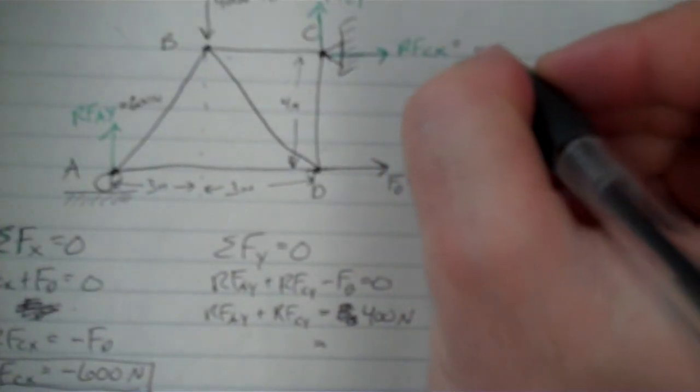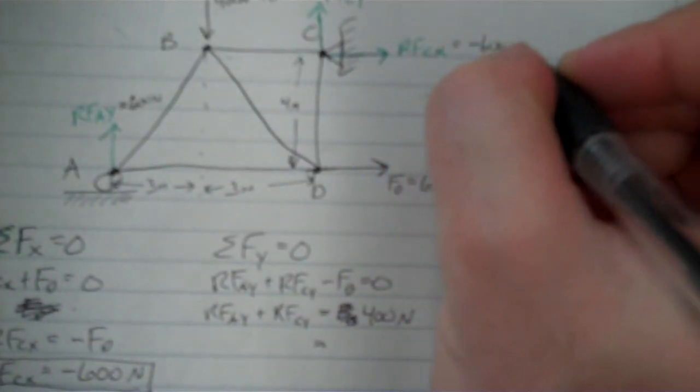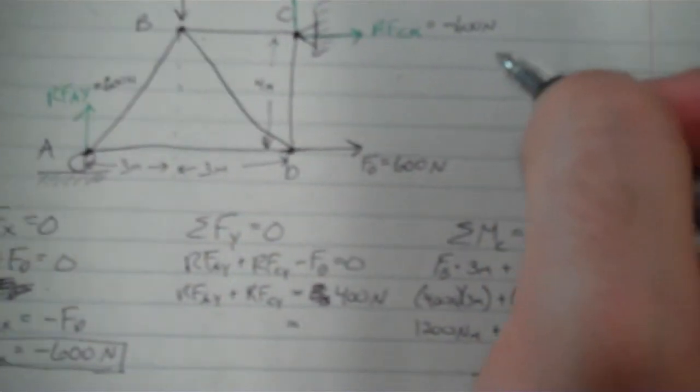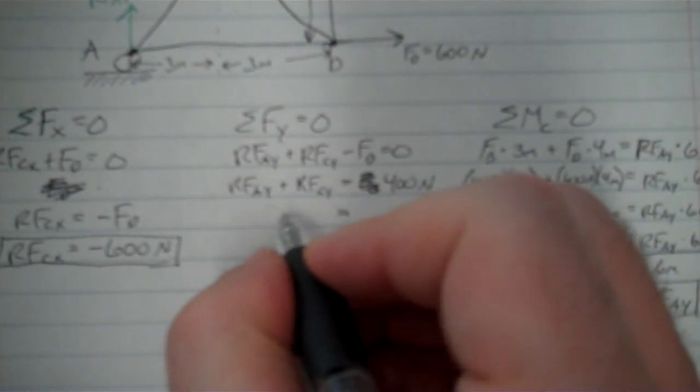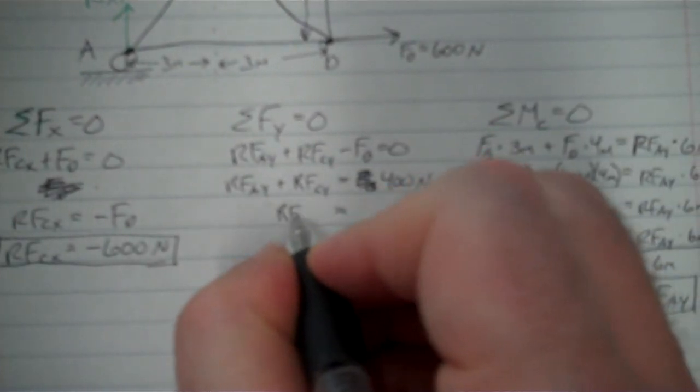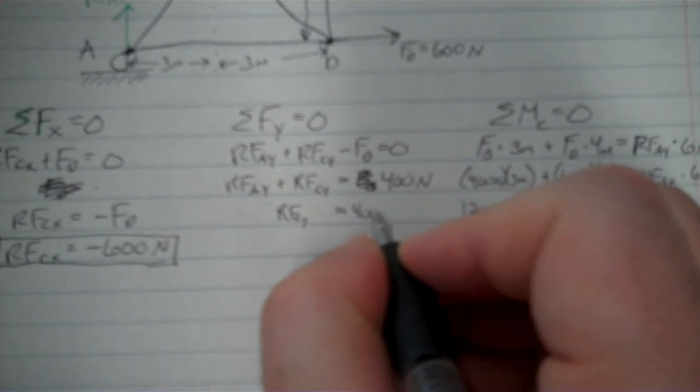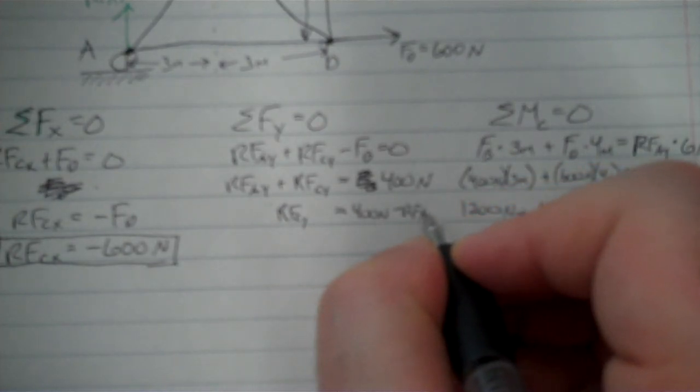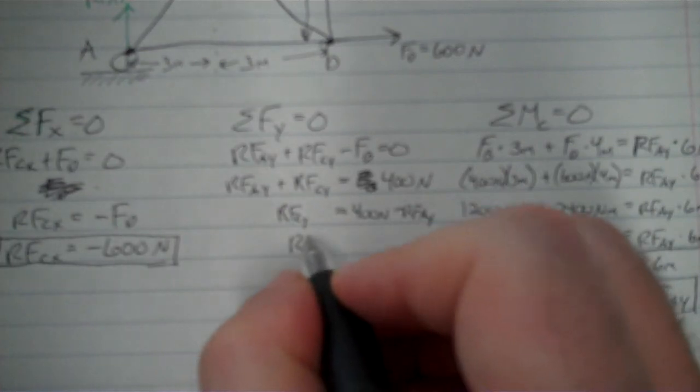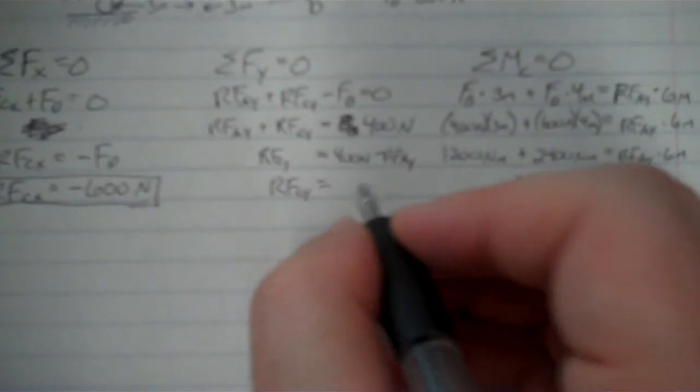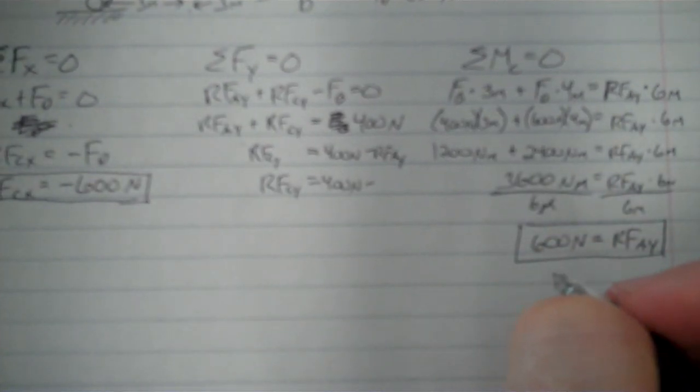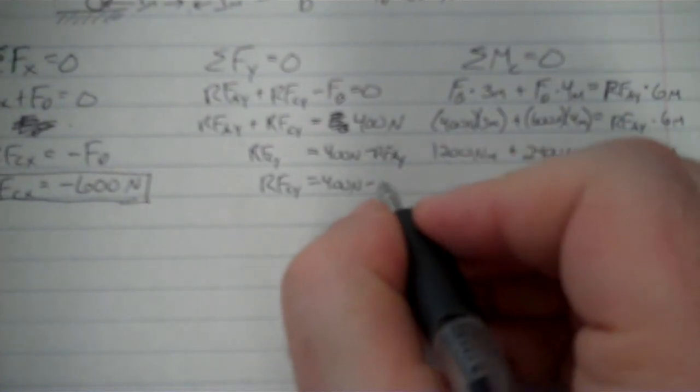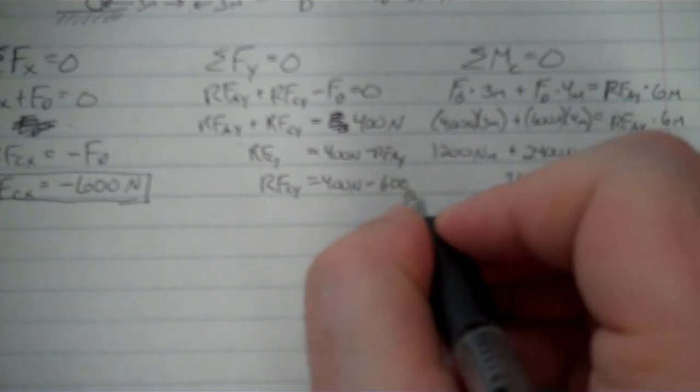I know RFCX, I can label that too, is equal to negative 600 newtons, and it's negative because it's the opposite direction in here. Now I'm going to go back to my Y equation, plug in what I know for this. RFCY is equal to 400 newtons minus RFAY. RFCY is equal to 400 newtons minus 600 newtons.